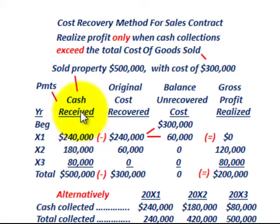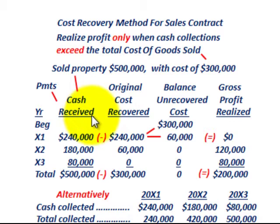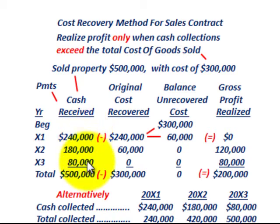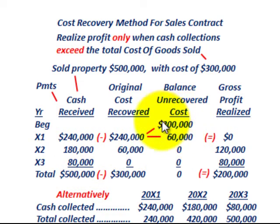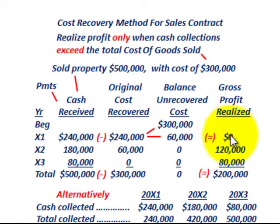We're going to receive some cash payments over a three-year period, looking at years 20x1 through 20x3. Since we're using the cost recovery method, you're not going to realize any gross profit until you've recovered all the cost on the sale — in this case, the property. I've set this up in table form showing cash received and the balance of the unrecovered cost. We start with an unrecovered cost of $300,000, and as we receive cash payments we determine when to recognize gross profit.